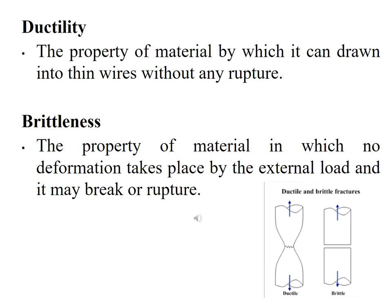The next property is ductility. Ductility is the property of a material by which it can be drawn into thin wires without any rupture — such a material is called ductile. Next is brittleness: the property of a material in which no deformation takes place under external load and it breaks or ruptures directly. In the figure you can see both ductile material and brittle fractured material. Glass is an example of a brittle material.